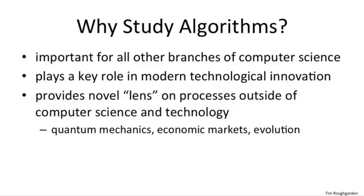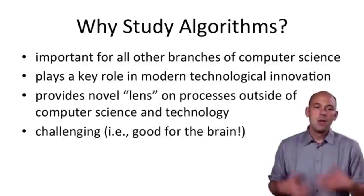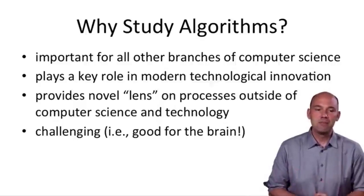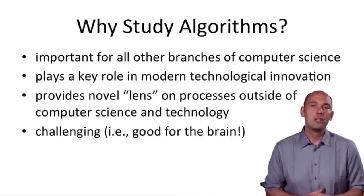Third, although this is outside the scope of this course, algorithms are increasingly being used to provide a novel lens on processes outside of computer science and technology. For example, the study of quantum computation has provided a new computational viewpoint on quantum mechanics. Price fluctuations in economic markets can be fruitfully viewed as an algorithmic process. And even evolution can be usefully thought of as a surprisingly effective search algorithm. The last two reasons for studying algorithms might sound flippant, but both have more than a grain of truth to them.